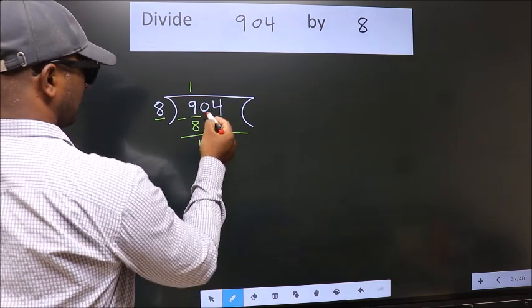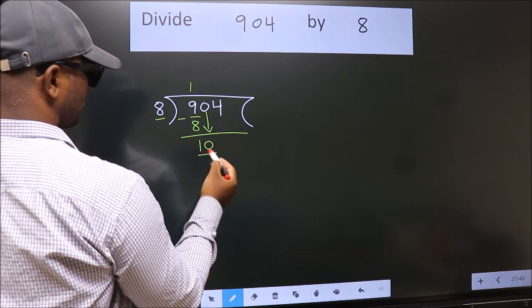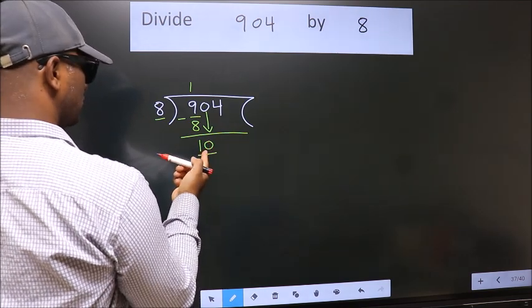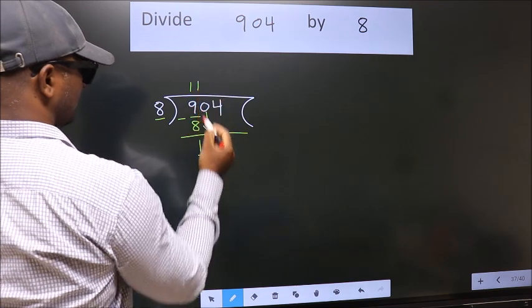After this, bring down the beside number. So 0 down. So 10. A number close to 10 in the 8 table is 8 once 8.